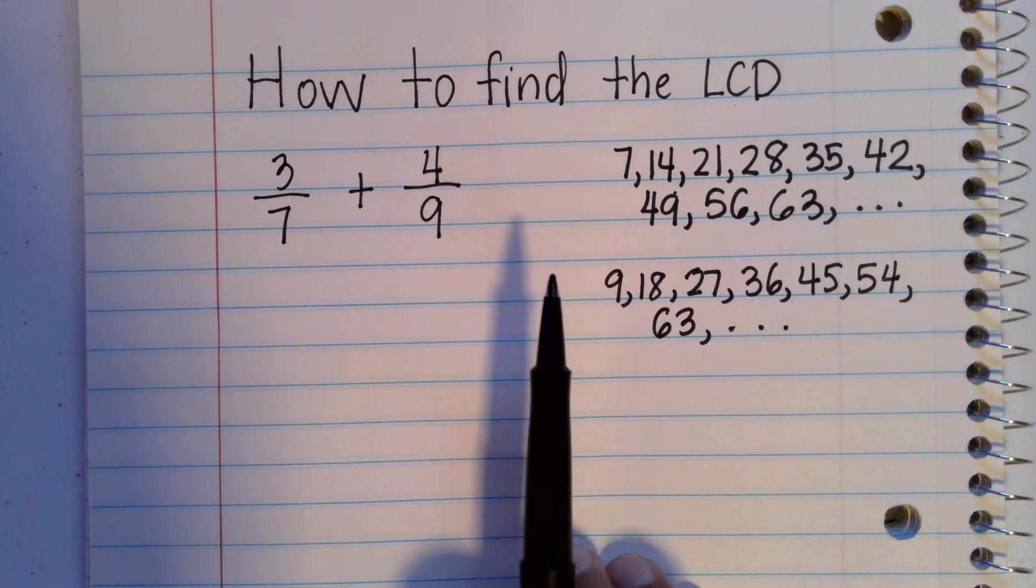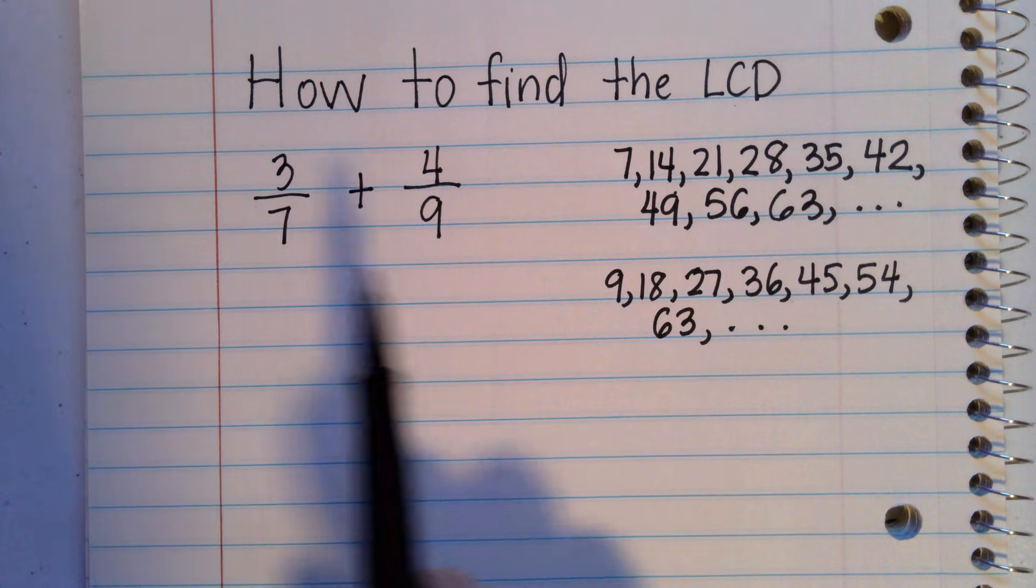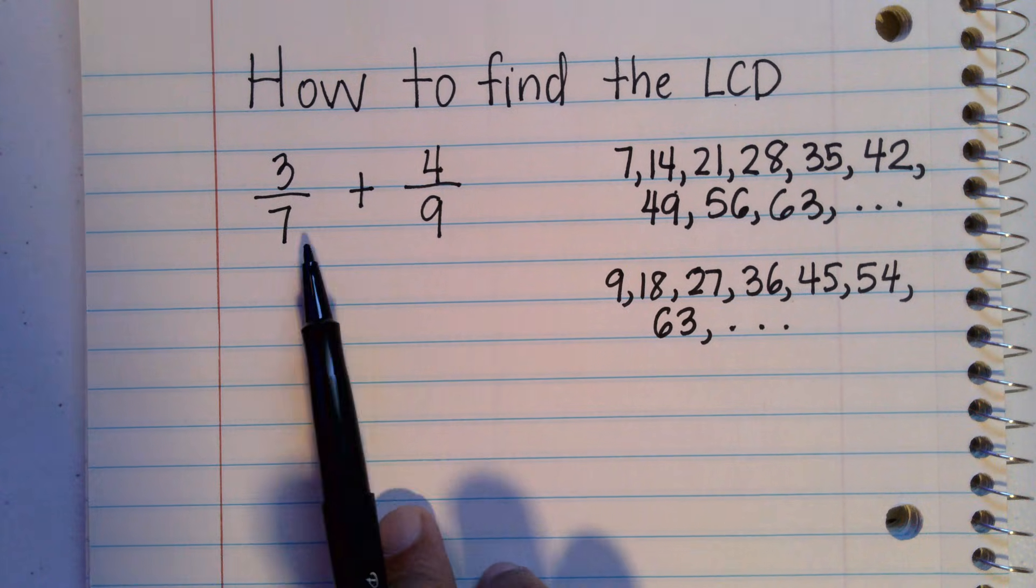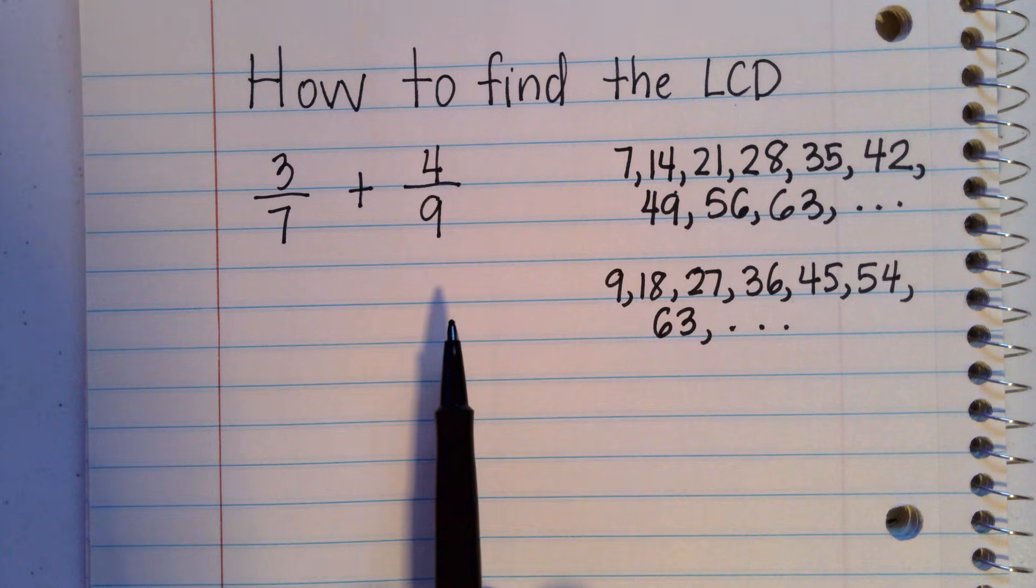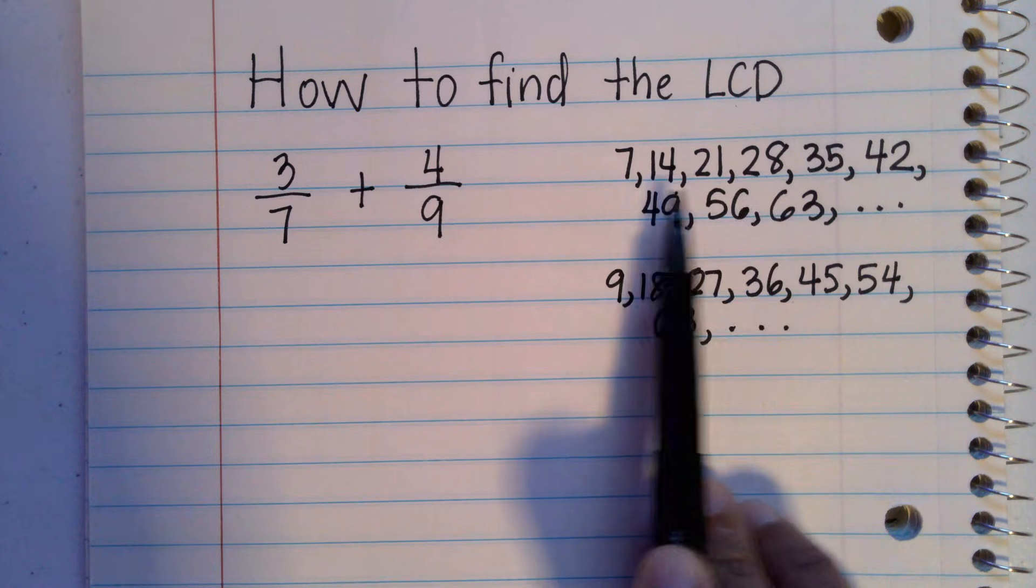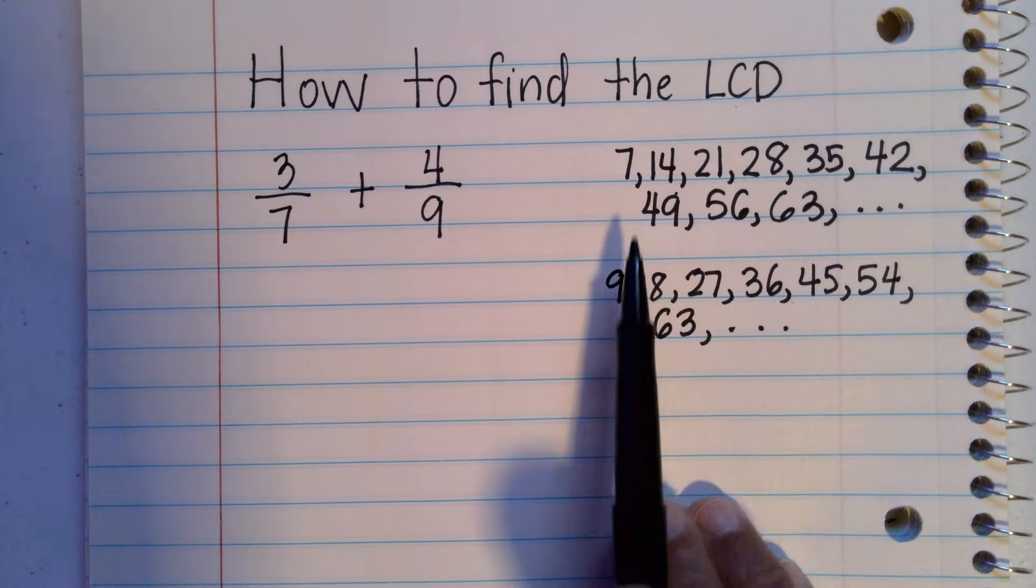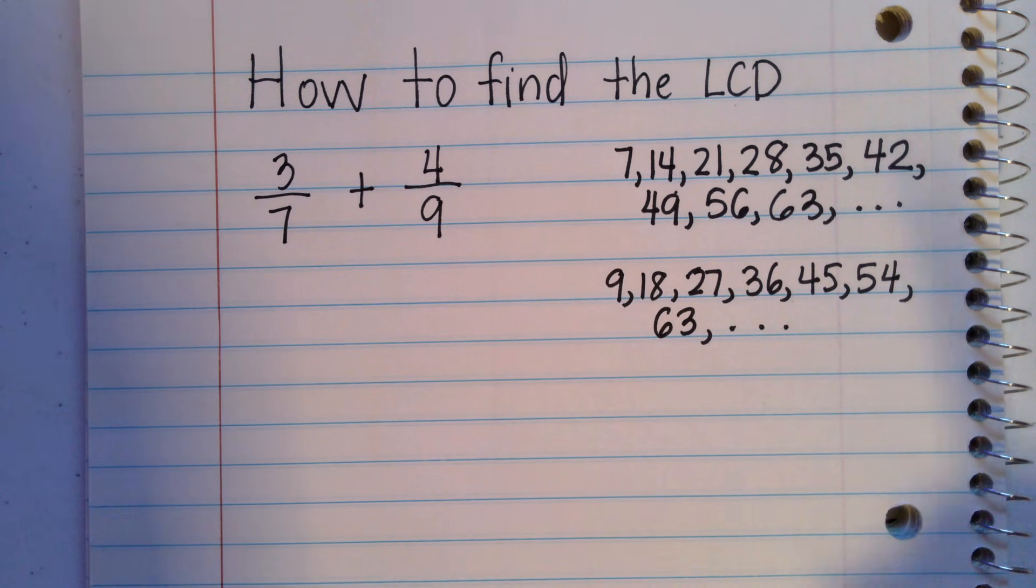So the question is, how do we find the LCD? The least common denominator is actually the least common multiple of the two denominators. So one way to find the LCD is to make a list of all the multiples of the two denominators until you find what is common to them.